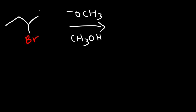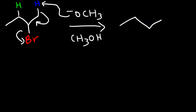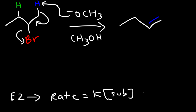The strong base can either go for the primary blue hydrogen or the secondary green hydrogen. The E2 reaction is a concerted reaction mechanism — it all happens in one step, so there are no carbocation rearrangements. The rate depends on the concentration of the substrate and the concentration of the base, making it first order with respect to each but second order overall.